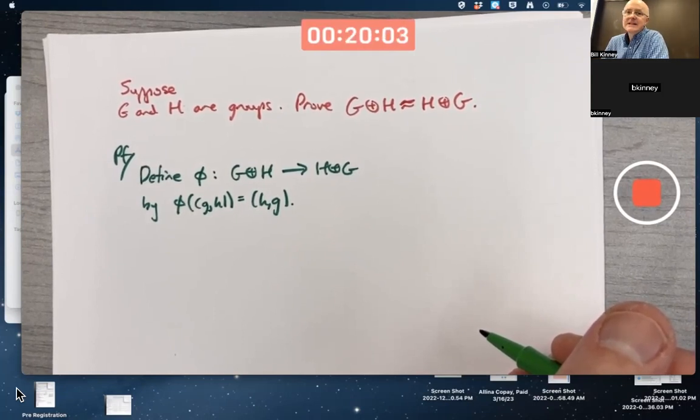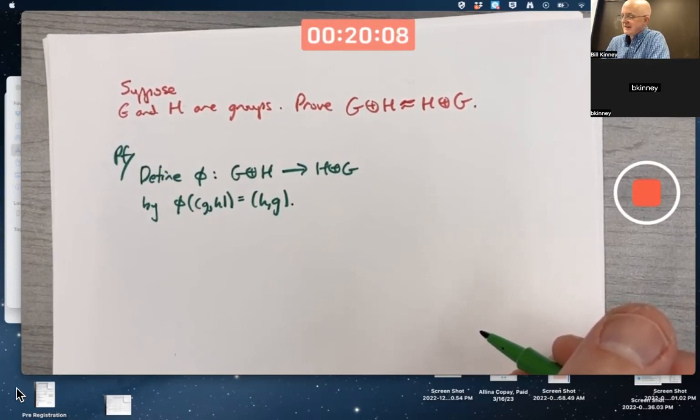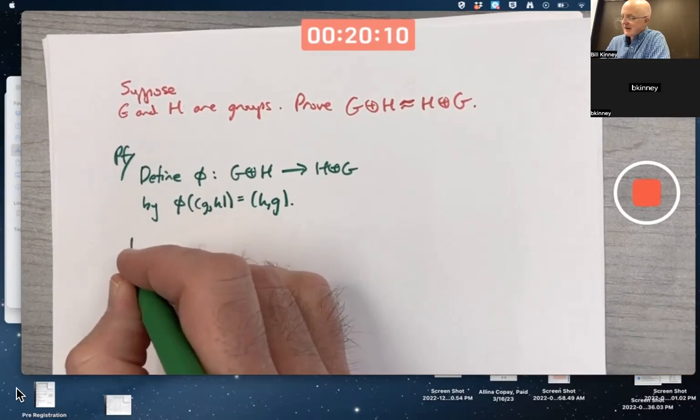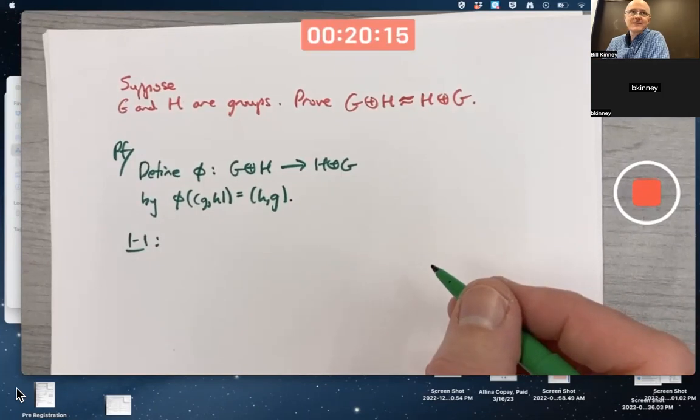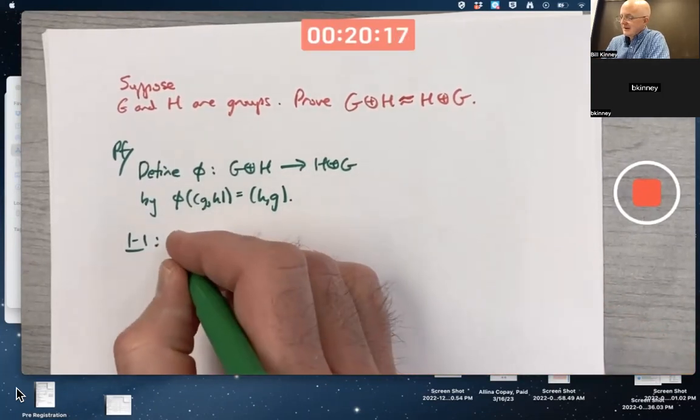And then the issue is, is this really an isomorphism or not? Is it one-to-one, onto, and operation preserving? So let's go ahead and see if we can prove those things. One-to-one, we think it probably is.